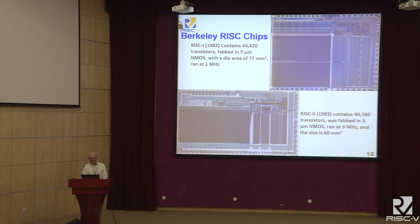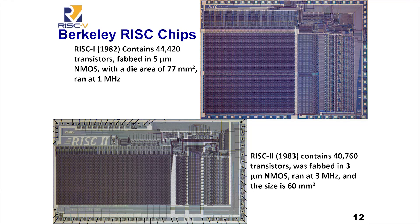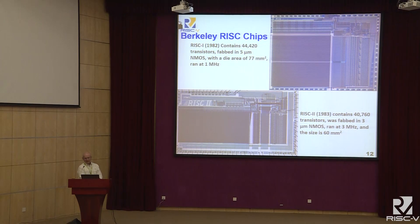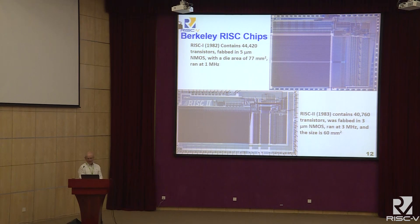In 1982, Berkeley students built a chip with only 45,000 transistors. The first was called RISC-1, done by five students; the second, RISC-2, was done by just two students and was a much better design. It ran easily three times faster with fewer transistors. We did two more projects after that — one for Smalltalk and one called SPUR for LISP processing. The naming lesson: I wish I'd just called them RISC-1, RISC-2, RISC-3, RISC-4.